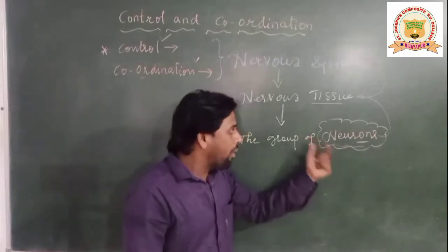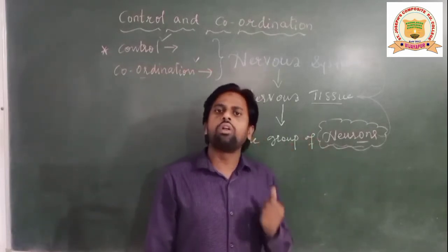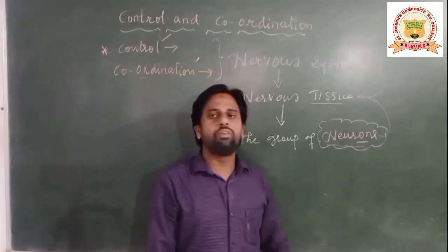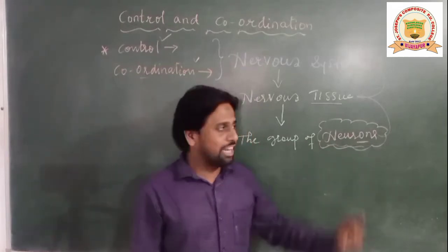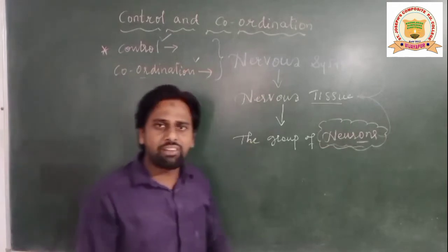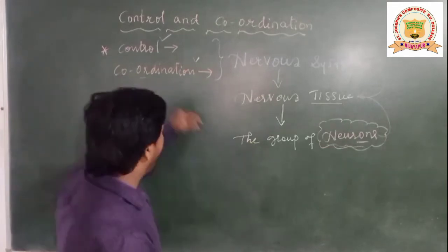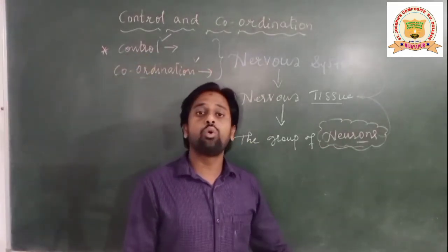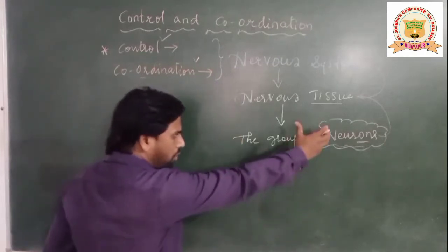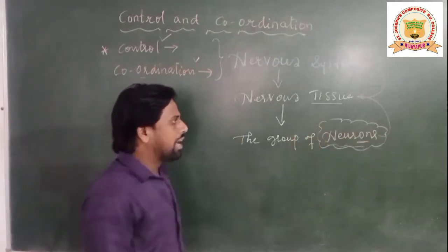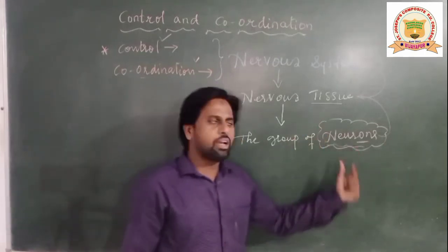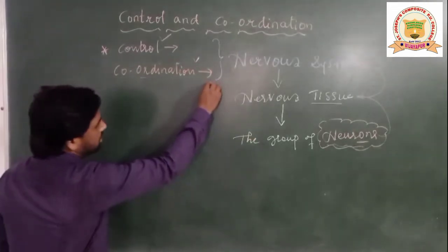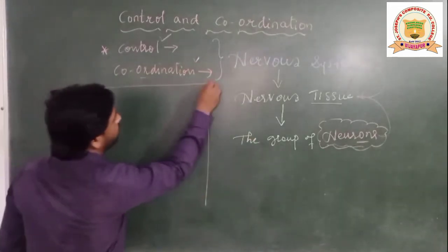We need to study about the structure and function of the neuron. How exactly does a neuron look, what is its structure, and what is its function — we need to understand all of this. Then only we can understand what exactly the nervous system is and how it acts as controller and coordinator. Before going to the explanation of neuron structure and function, I want to mention one important word.